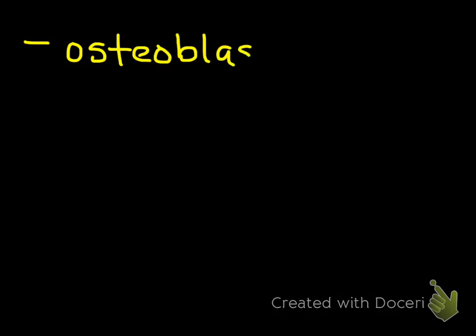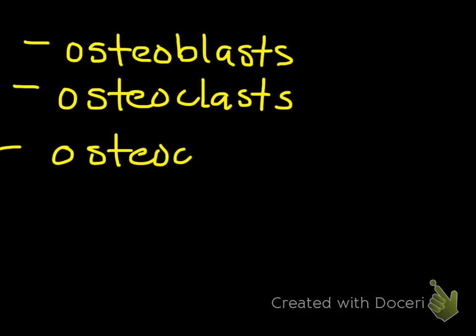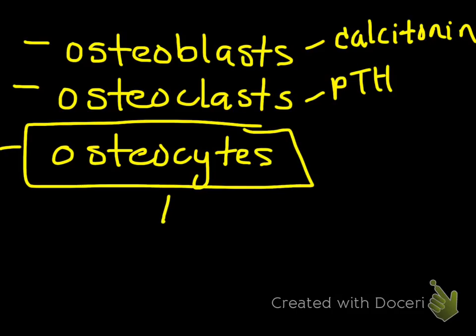You should know the three bone cell types: osteoblasts, which are the bone builders; osteoclasts, which are the bone crushers; and osteocytes, which are the mature bone cells that live in the lacunae. You should also know the hormones: calcitonin stimulates osteoblasts to build bone, and parathyroid hormone stimulates osteoclasts to break down bone.